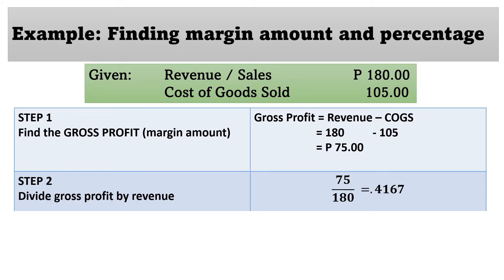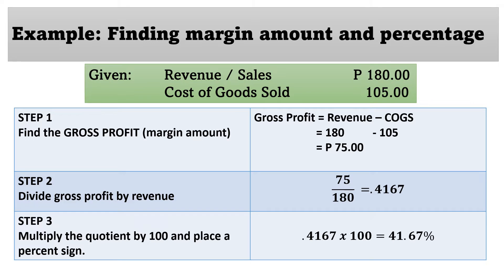For step two, divide gross profit by revenue. The gross profit is 75 pesos and revenue is 180 pesos, giving 0.4167. For step three, multiply the quotient by 100 and place a percent sign: 0.4167 times 100 equals 41.67%. So if the revenue is 180 pesos and the cost of goods sold is 105 pesos, the margin percentage is 41.67%.